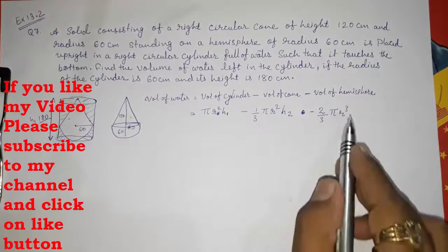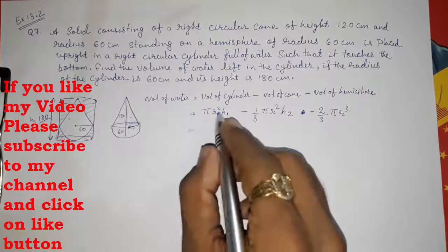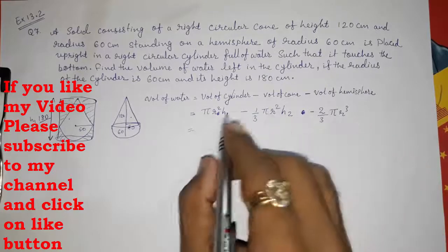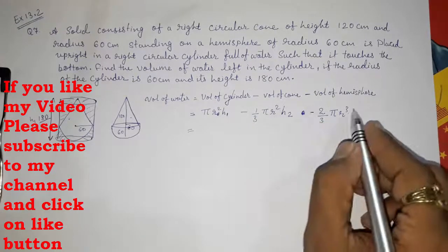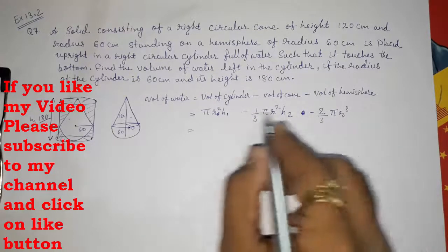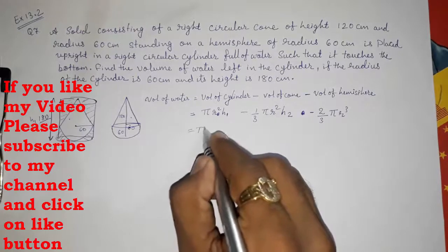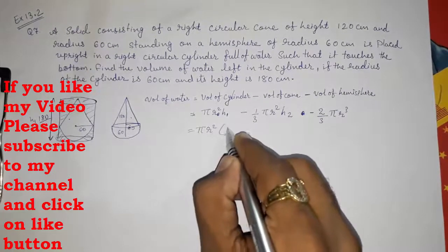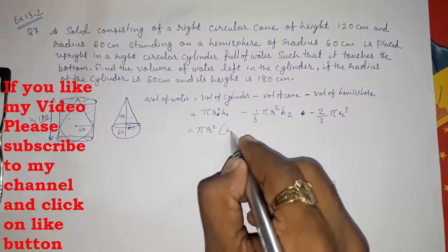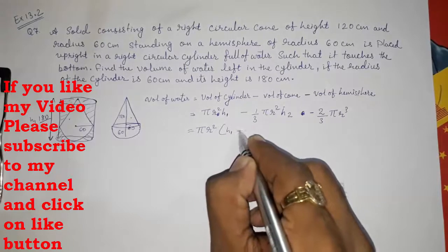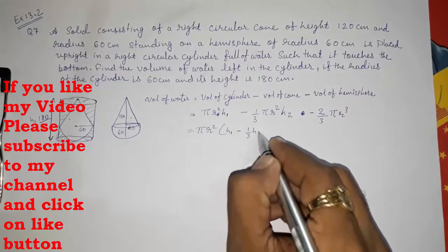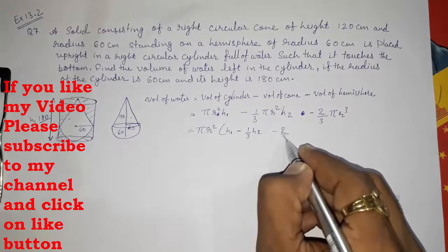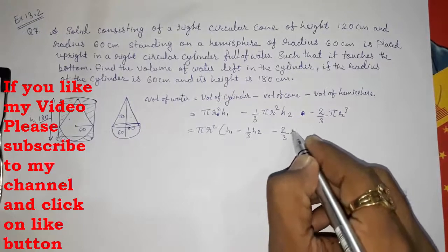Now taking out π and r² as common factors — from r³ we can take out r² leaving r — we get: π r² [h1 − (1/3) h2 − (2/3) r].